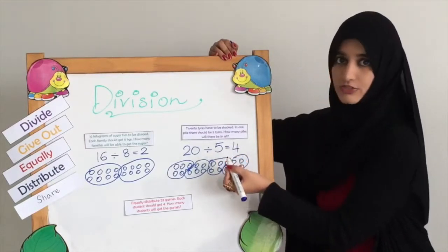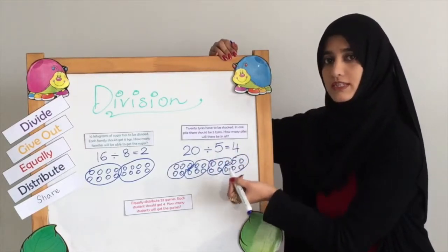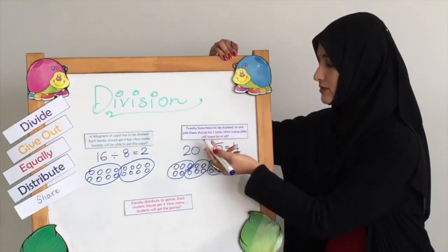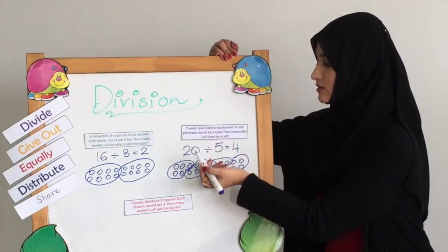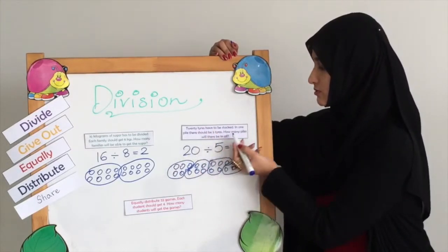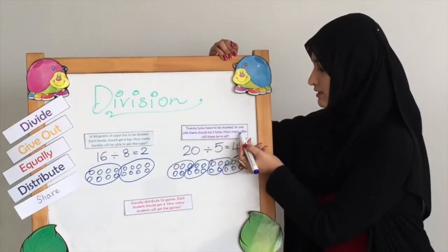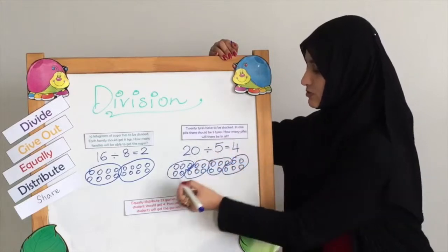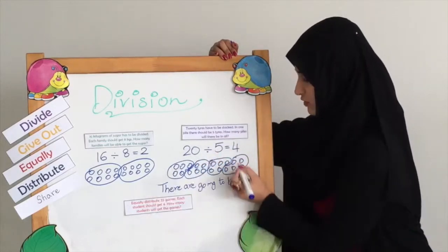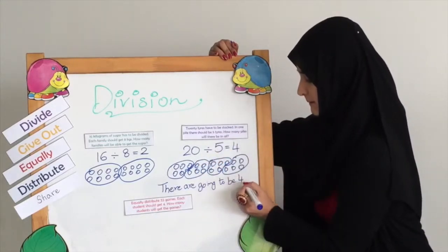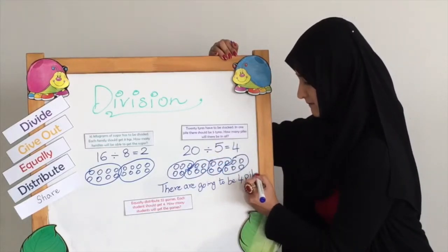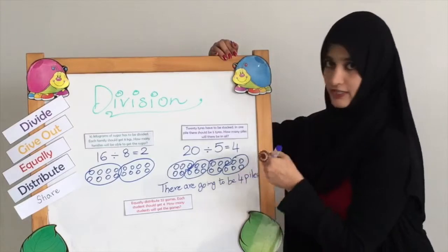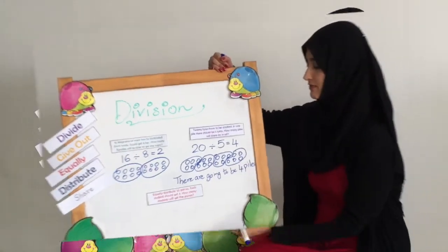The answer is going to be in a sentence because we are solving a problem sum. So the answer is: there are going to be 4 piles of tires.